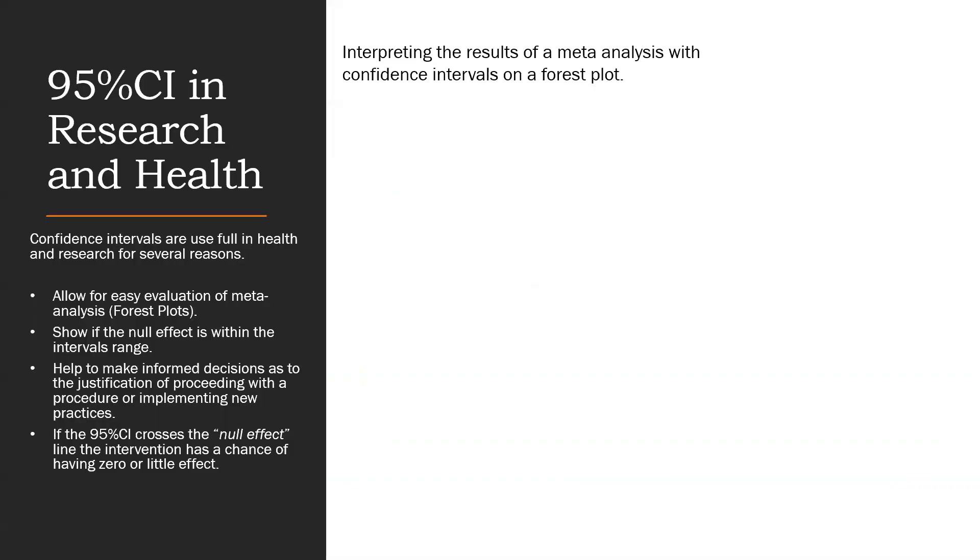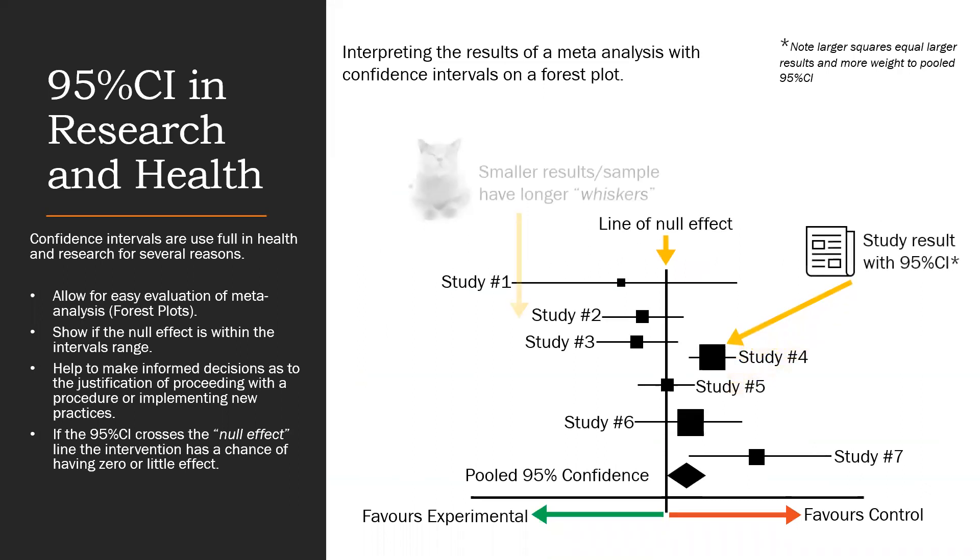So 95% confidence intervals are used in research articles to give the reader a clear idea of the quality of the research. Intervals allow healthcare professionals and policymakers to make informed decisions based on the strength of the study results and the size and spread of the data around the point estimate.